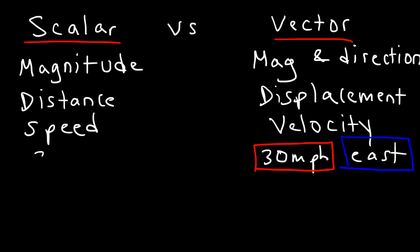If an object is simply traveling at 30 miles per hour with no direction, then we only have magnitude only, which makes it a scalar quantity, not a vector quantity. So if you can apply direction to something, that makes it a vector. If direction cannot be applied to it, then it's a scalar quantity.